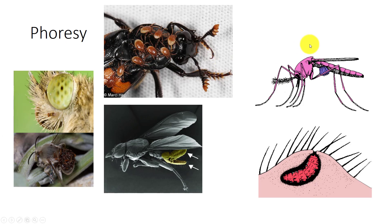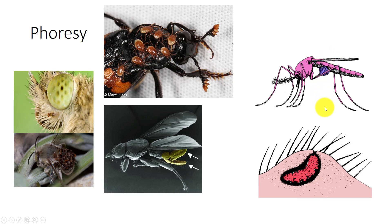Female botflies capture mosquitoes, hold them in such a way to prevent injury, then place about 30 eggs on the mosquito's undersurface without interfering with flight. The mosquito then carries the botfly eggs to vertebrate hosts. The elevation of temperature associated with the vertebrate host induces the eggs to rapidly hatch and fall onto the host.